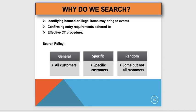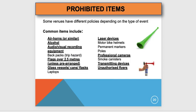Prohibited items are things that are not illegal to carry in everyday life — you wouldn't get arrested for them — but they are not allowed under venue policy. Common prohibited items include air horns, vuvuzelas, alcohol, professional audio and visual recording equipment, flags over 2.5 metres unless pre-arranged with a fire safety certificate, glass vessels, cans, flasks, laser devices, transmitting devices, and unauthorised flyers.